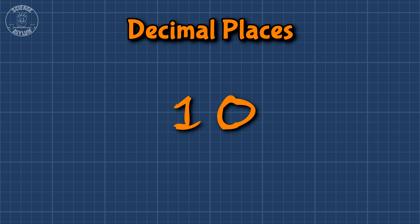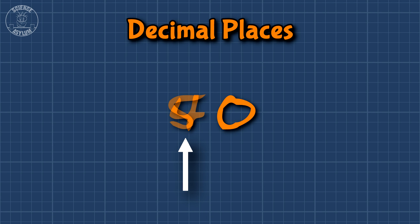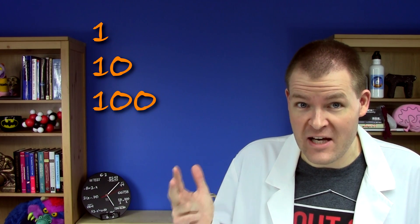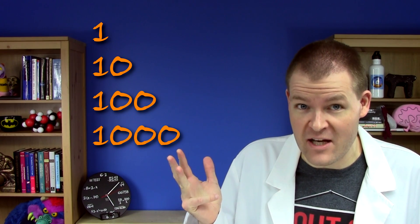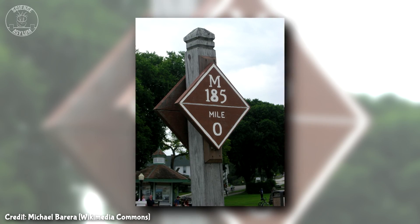Everybody still with me? Once we get to 10, we have to add an extra digit, and that extra digit has to count through our single digit numbers. We don't get to add a third digit until a hundred. In other words, we have a ones place and a tens place and a hundreds place and a thousands place and so on. They're kind of like milestones for our decimal number system — those signs on roads that mark distance. I seem to be using a lot of metaphors in this video.